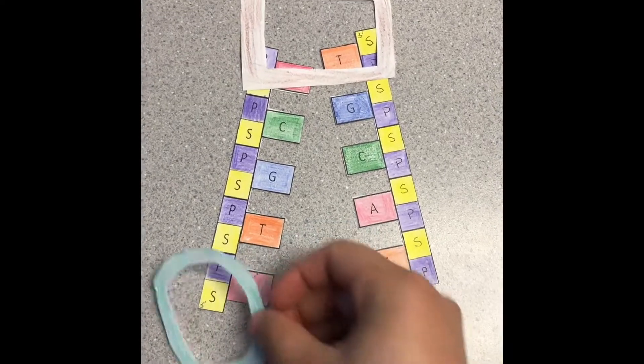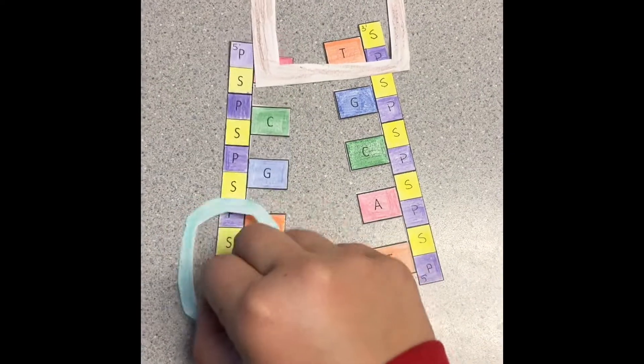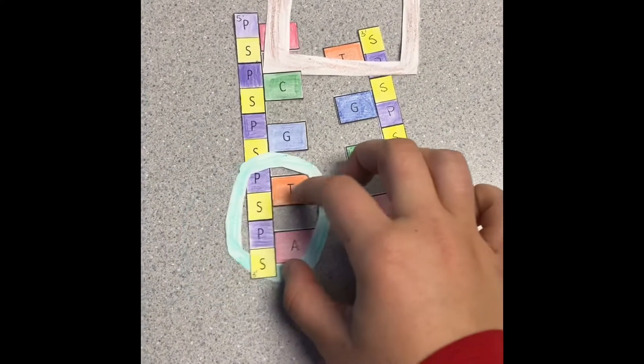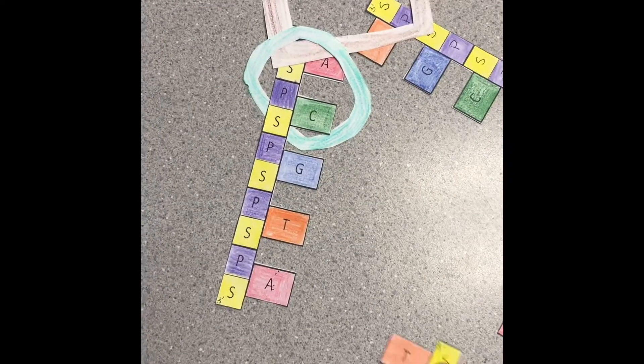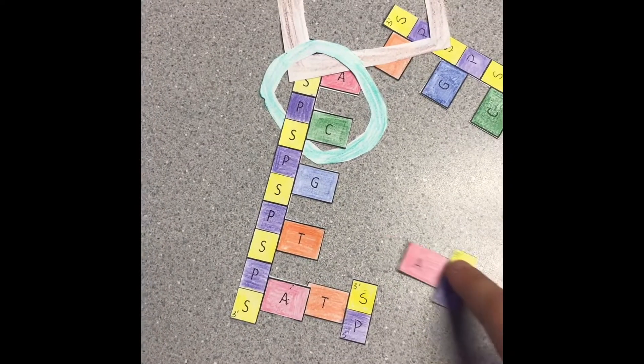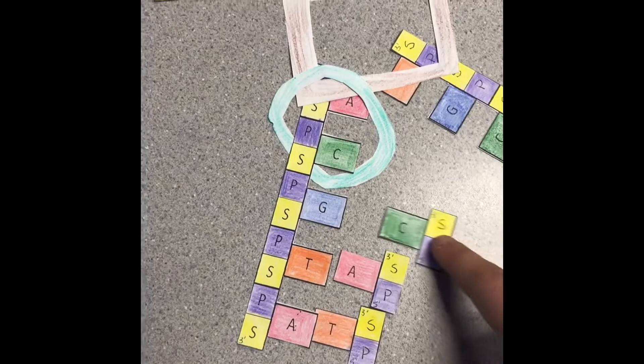DNA polymerase 3 goes on to the leading strand to add the complementary bases. The bases are then added in the 5' to 3' direction like so.